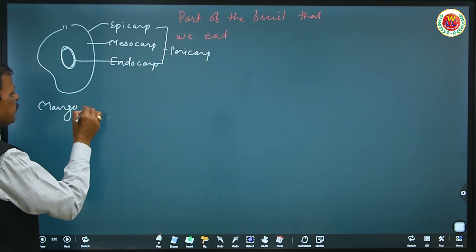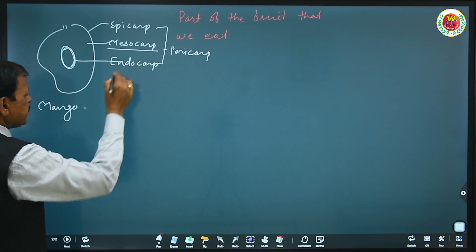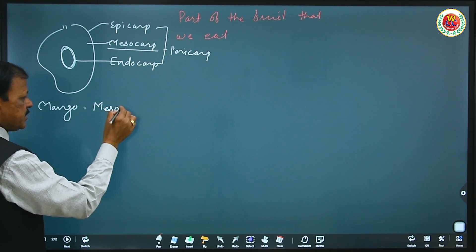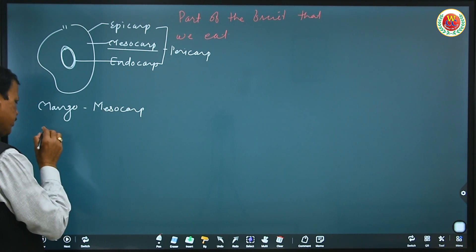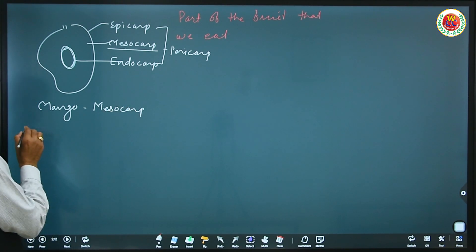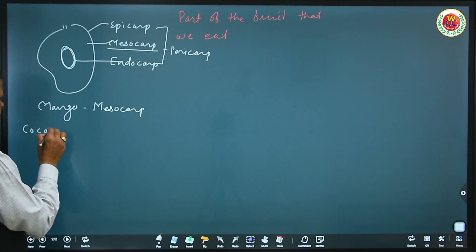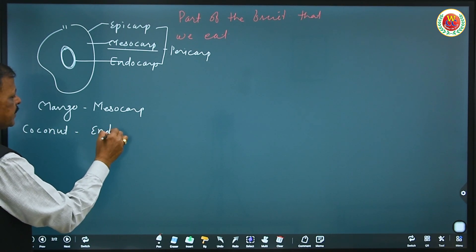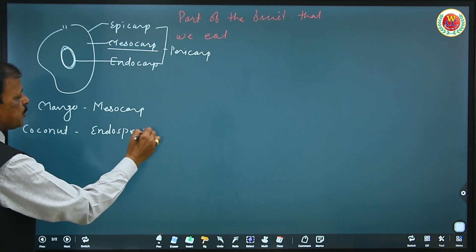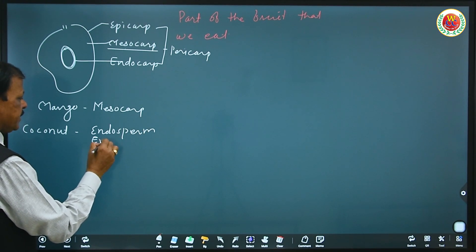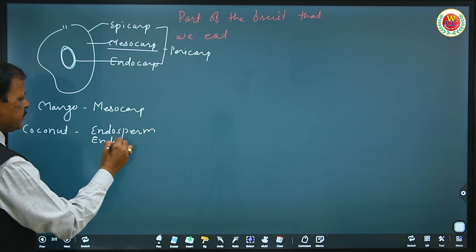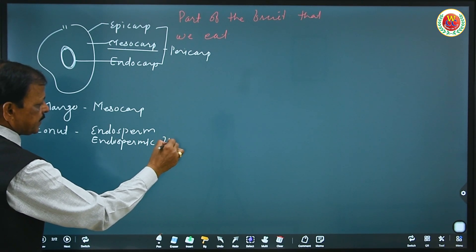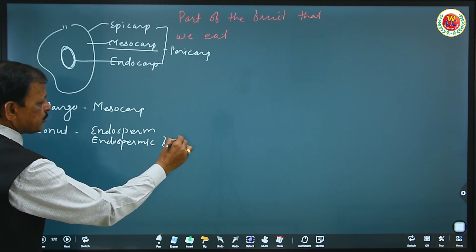Now the very important question is which part of the fruit we eat. For mango — as the diagram is already given — we eat the mesocarp, as it is fleshy and juicy. For coconut, we eat the endosperm and the endospermic fluid, which is coconut water.